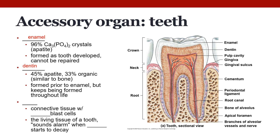The next part of the tooth is dentin, the brownish section visible in the photo. Dentin is about 45% calcium phosphate (apatite) and 33% organic — it is very similar to bone. It forms prior to the enamel, but unlike enamel it can be reformed, and it provides significant support for the enamel. Pulp is the innermost area of the tooth, shown in an orangey color in the picture. It contains vascularization and innervation, is a connective tissue formed by odontoblasts, and is the living tissue of the tooth. It sounds the alarm when the dentin above it starts to decay, warning that the tooth could be irreparably damaged.